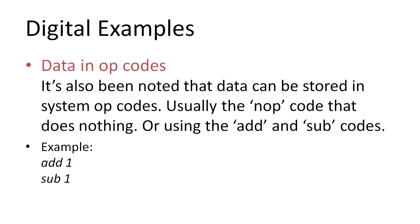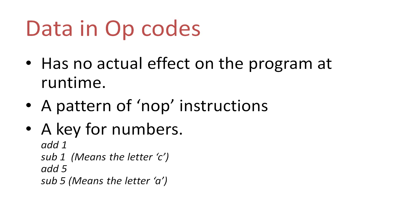A less common but still used example is opcodes. Generally patterns would be made with the NOP code. The NOP code is a void instruction and it does nothing, so generally that's why it's used. However, another style is by using add and sub — the outcome of add then sub would be nothing, so for example add 1, sub 1 or add 5, sub 5. Though these patterns have no effect on the program at runtime, when deconstructed these patterns could mean something. Different add and sub numbers could mean different things — for example, the number 1 could mean the letter C, and the number 5 could mean the letter A. So: NOP, add 1, sub 1, add 5, sub 5.